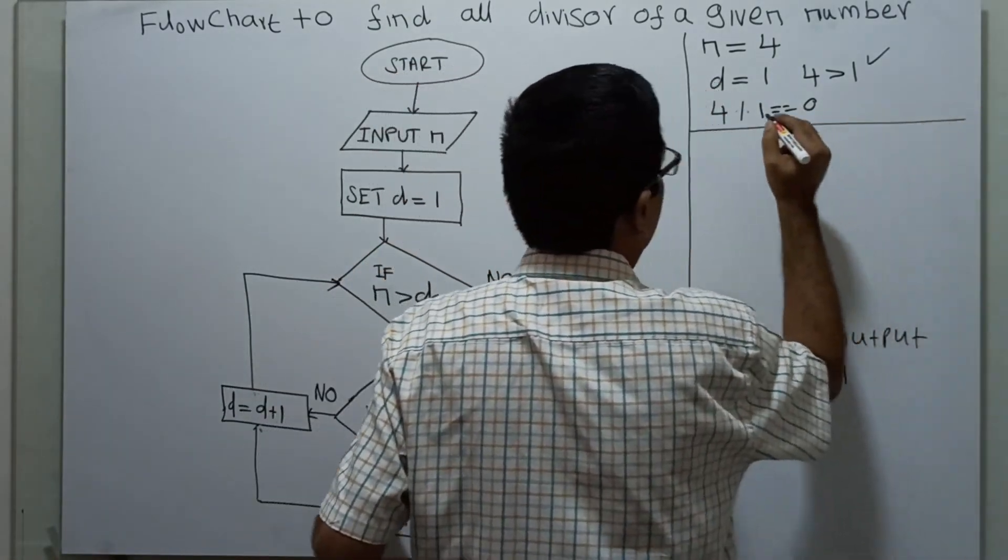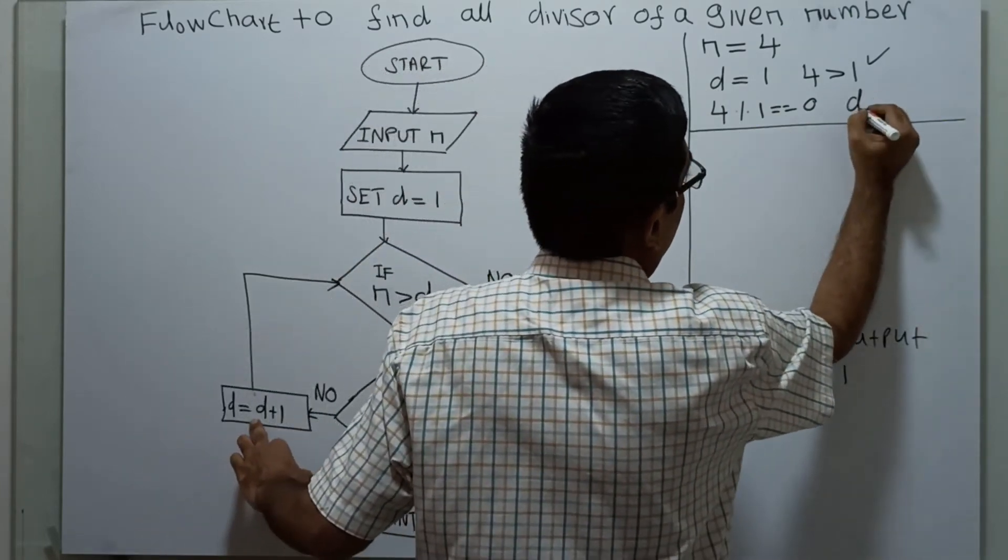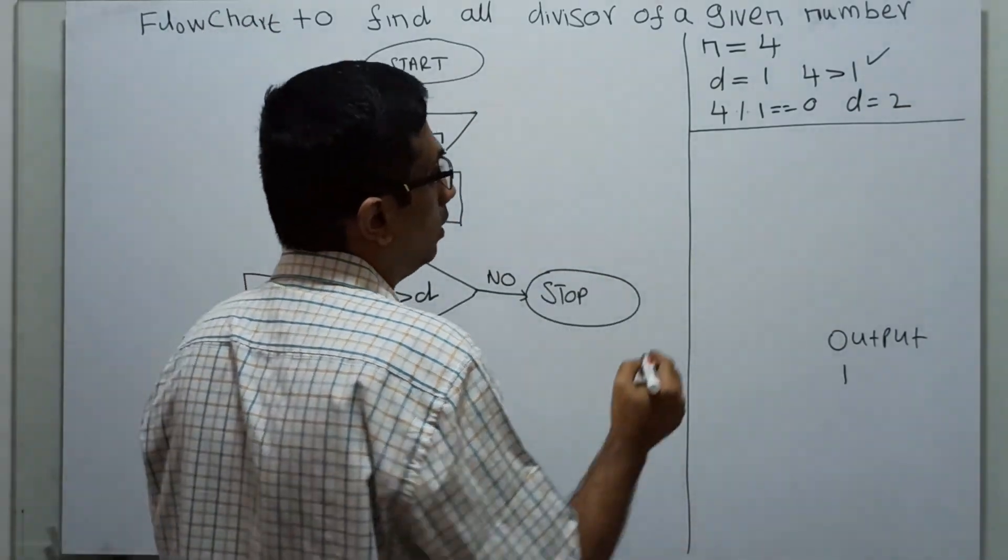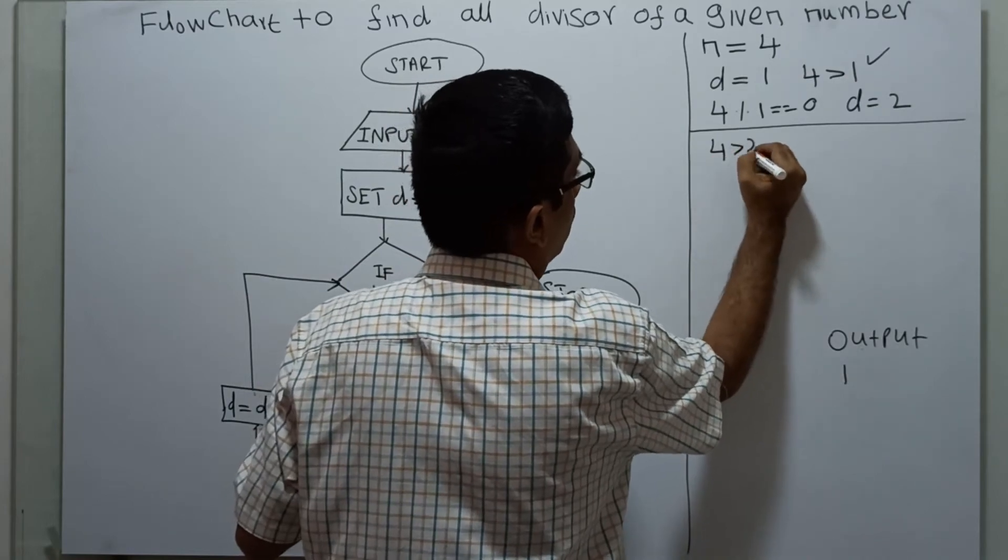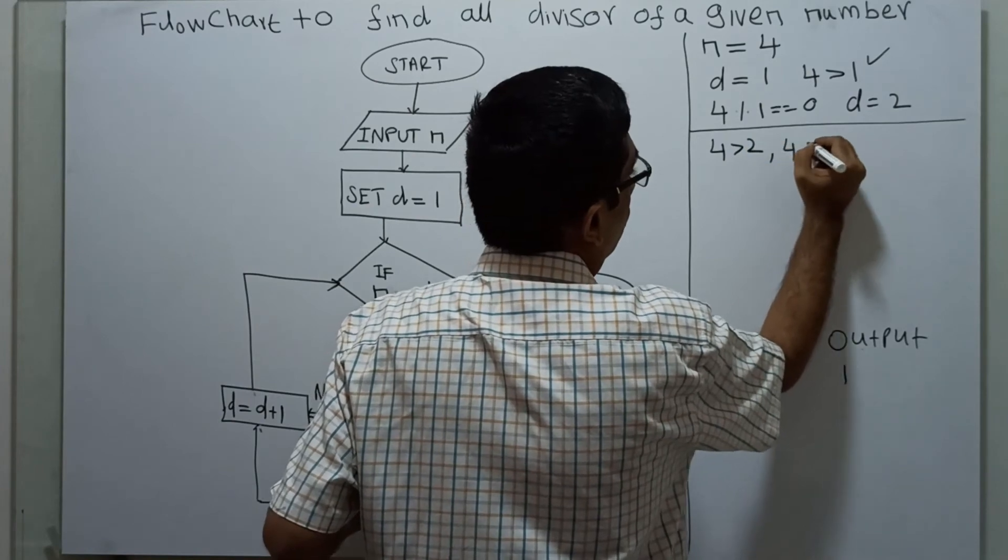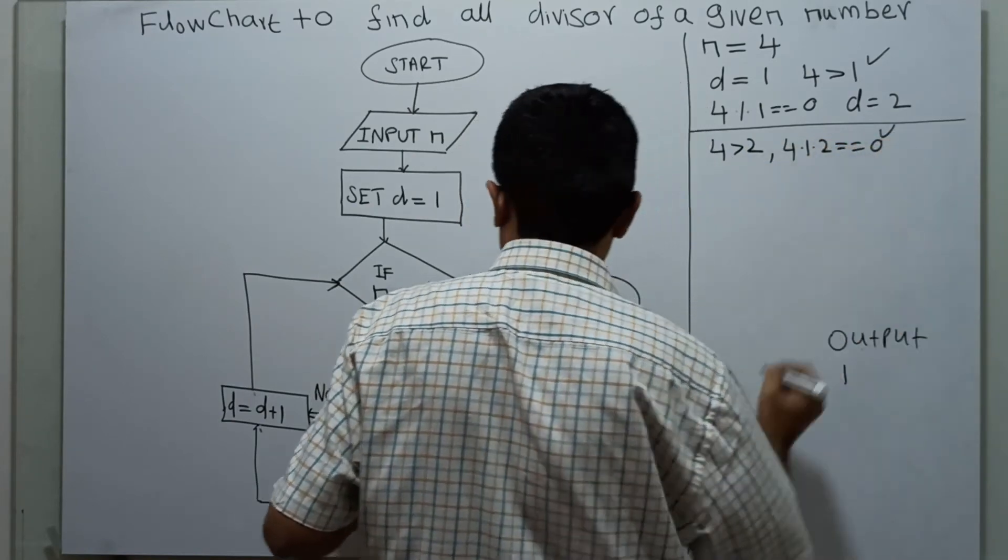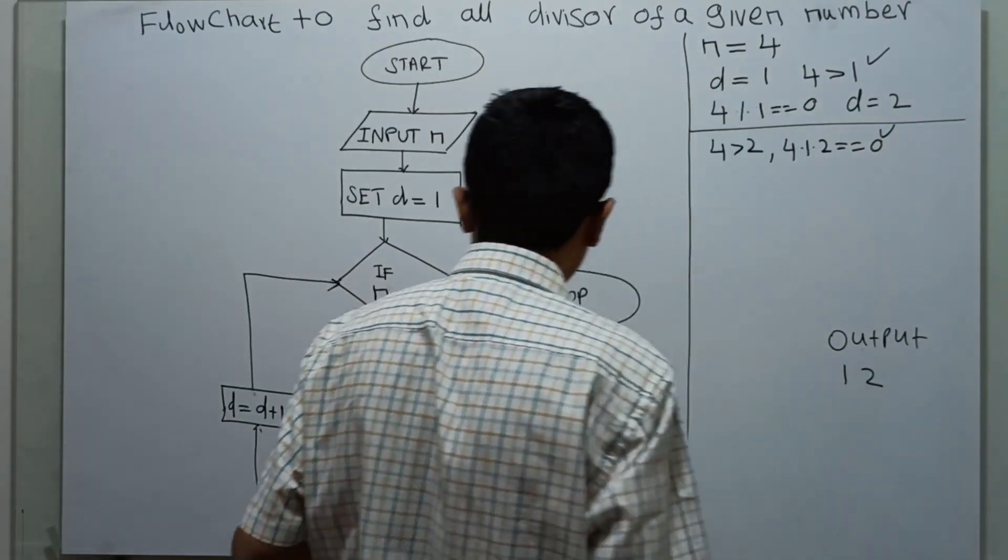Next iteration, d becomes d plus 1, so d becomes 2 now. I am checking n greater than d, so 4 greater than 2, which is true. And 4 modulo 2 equal to 0. This is also true, so I am printing d. The output value of 2 will get printed.